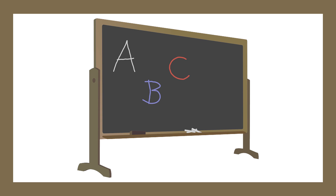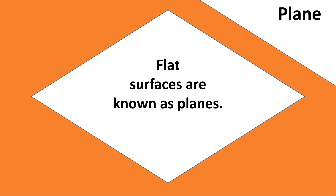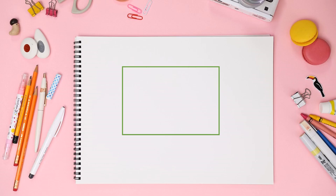The surface of the blackboard in your classroom is also flat. Flat surfaces are known as planes. Usually we represent a plane by a rectangle or a parallelogram.